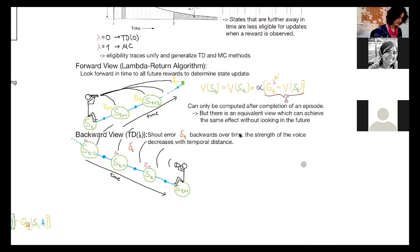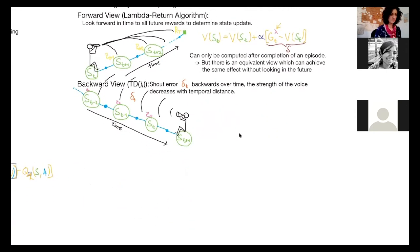And in the backward view, you can imagine it like you're sitting on this beam of states and you're shouting the TD error backwards in time. And the strength of your voice decreases over temporal distance. So the most recent states hear the error the loudest and the ones that are further back in the past hear it more quietly.